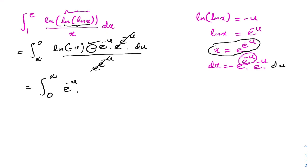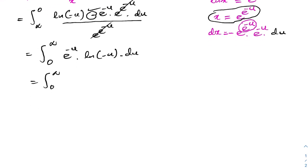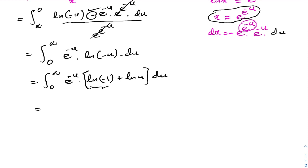Using the property of natural log, we can write natural log of minus u as natural log of minus 1 plus natural log of u. We split this into two integrals. We know natural log of minus 1 equals i times pi, which is a constant, so it comes outside the integral sign.